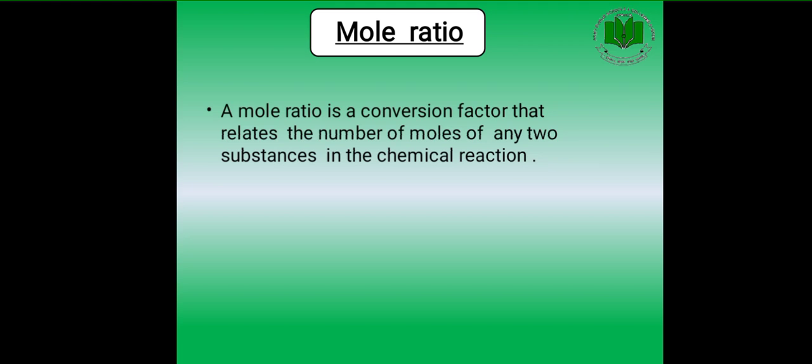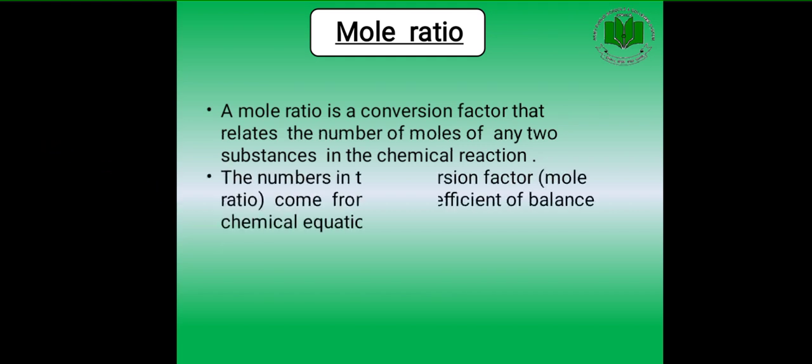Mole ratio is the conversion factor that relates the number of moles of any two substances in a chemical reaction. The numbers in the conversion factor mole ratio come from the coefficients of the balanced chemical equation. So mole ratio is a type of conversion factor derived directly from the balanced equation.